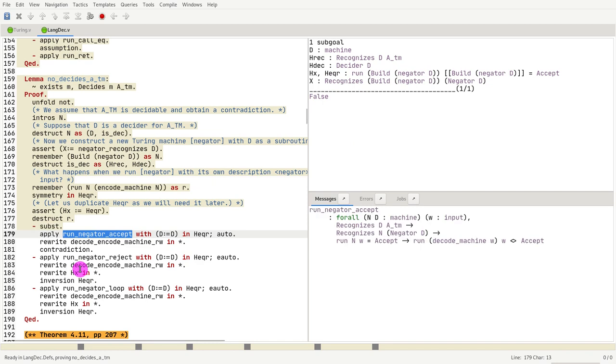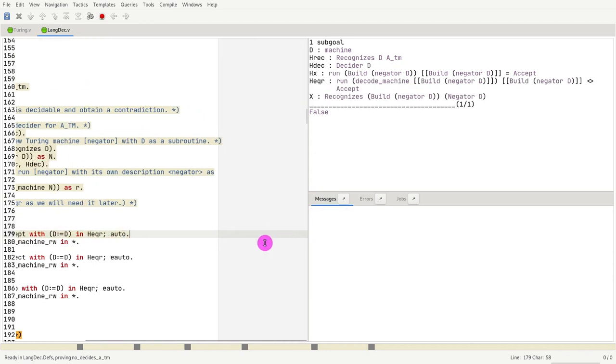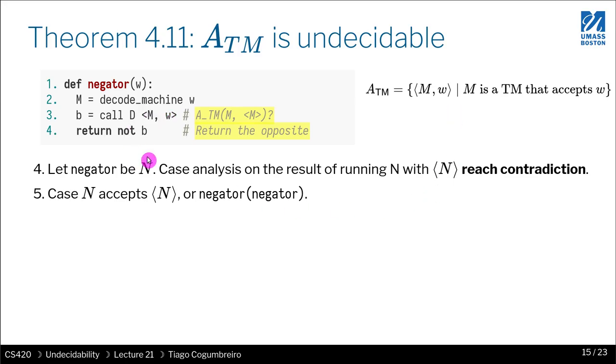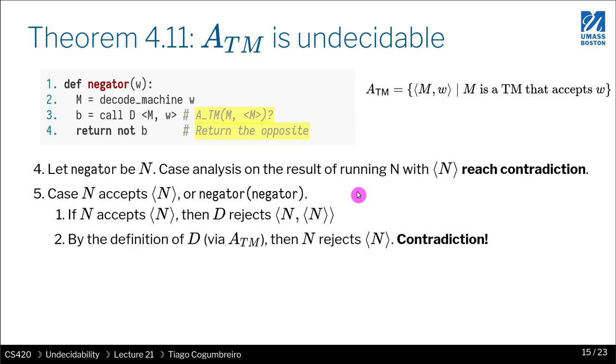We know that the machine accepted the input. So if that's the case, then we know that if the machine accepts, then the decoded machine will reject. Which is what we just said. If we kind of clear this up, we get the contradiction. Because we assume we do a case analysis and we know that this accepts, but by looking at how it's defined, we can conclude that it also rejects. Because this would have to be false. And for this to be false, then the machine N has to reject the input. But we just assumed that it did accept.